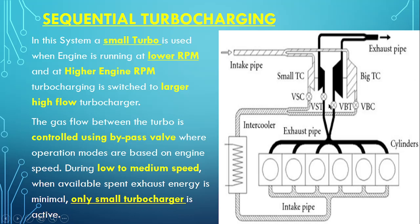Here you can see there are valves — these are the main control valves. Now how does it work? Basically in this system a small turbo is used when the engine is running at a low RPM, which is when the main engine has just started. In that case the small turbocharger will be used. But when it is running at a higher RPM and there is a larger flow of exhaust gas, then the bigger turbocharger will be used. I hope this concept is clear so far.